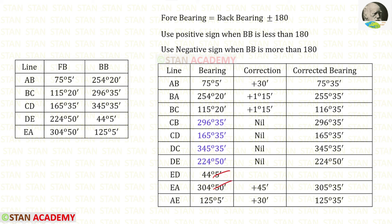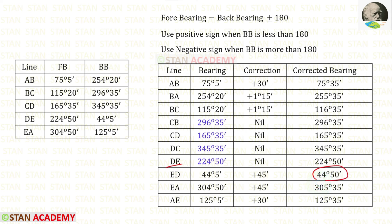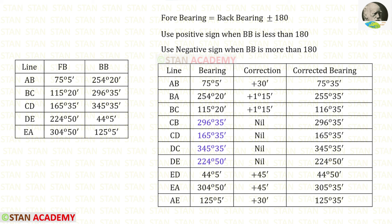We know that both readings at station E require the same correction. So for ED also, the same positive 45-minute correction should be applied. Adding this gives a corrected bearing for ED of 44 degrees 50 minutes. Now we can verify our answers: ED is the back bearing of DE. Since 44 degrees 50 minutes is less than 180, we use the positive sign: 44 degrees 50 minutes plus 180 degrees gives 224 degrees 50 minutes — which matches the known bearing for DE. So our answers are correct.